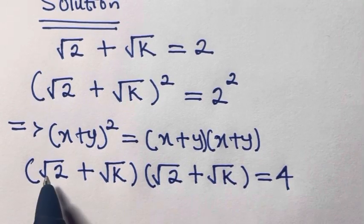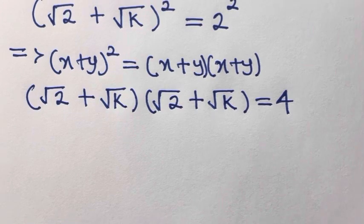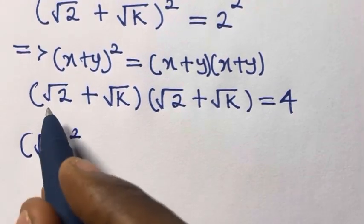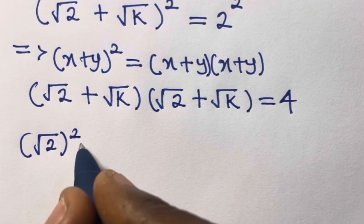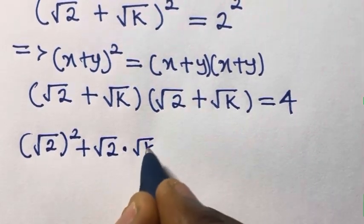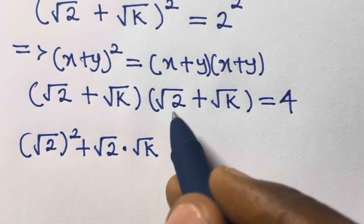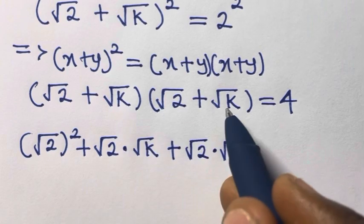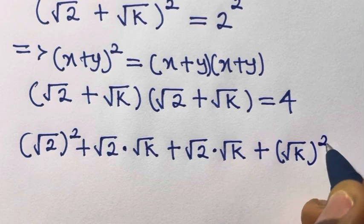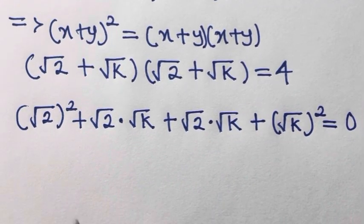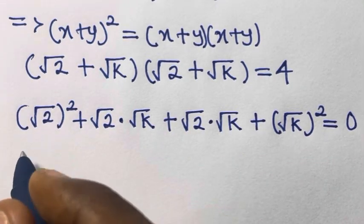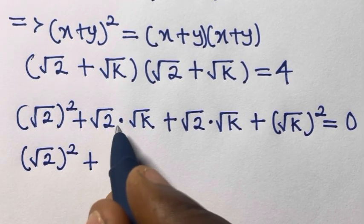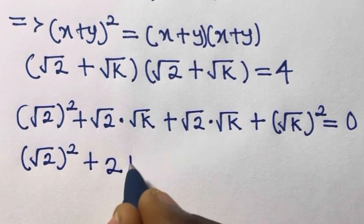What we are going to do now is expand this bracket. We have square root of 2 times square root of 2, which gives us square root of 2 squared; plus square root of 2 times square root of k; plus square root of k times square root of 2, giving us 2 square root of 2k; plus square root of k squared.